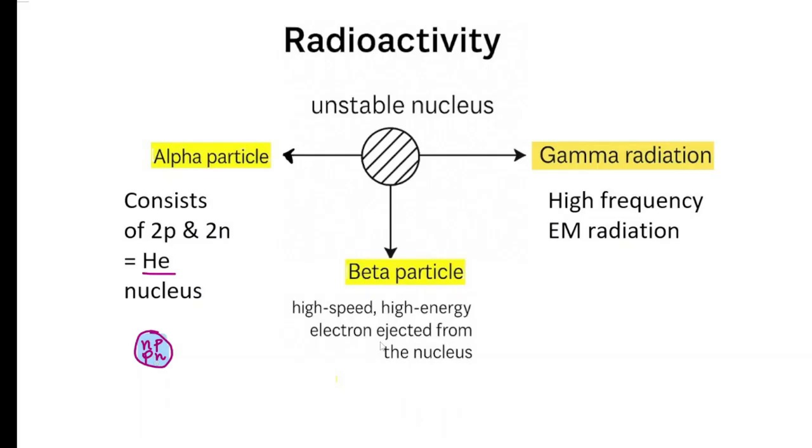Beta particles are high speed, high energy electrons ejected from the nucleus. So one might ask, oh, there are no electrons in the nucleus. So how is that possible?